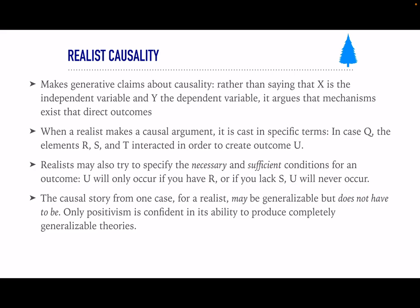Realists are less confident in their ability to produce completely generalizable theories because they say there may be things they can't see and can't know. Nevertheless, they are trying to create generalizable theories. Many people who work on very uncertain political outcomes follow a realist causality because they can't predict what's going to happen, but they can tell you what made it happen last time — and if you look at what made it happen last time, how can we think about making it happen again? So lots of public policy people are functionally critical realists rather than positivists, because that's the most useful form of causality for them.